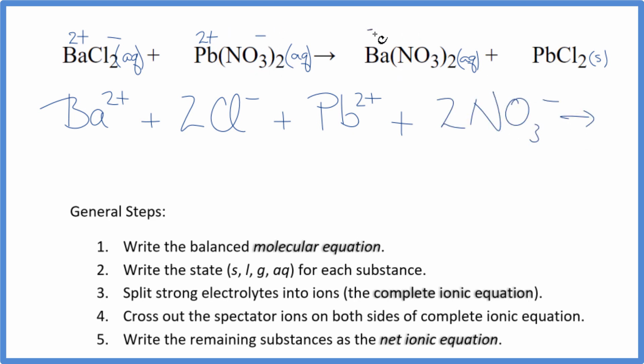For the products, barium was 2+, the nitrate ion 1−. So we have Ba 2+, plus again we have two nitrate ions, just like the reactants. And then with net ionic equations, we don't split solids apart. So we're going to leave this together as PbCl2. This is the complete ionic equation.